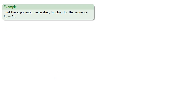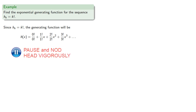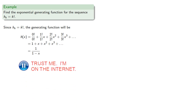For example, let's try to find the generating function for the sequence h_k equals k factorial. Since h_k equals k factorial, the exponential generating function will be the power series in x where the coefficients are fractions whose denominators are the successive factorials and whose numerators are the terms of the sequence, which simplifies to a recognizable closed form.